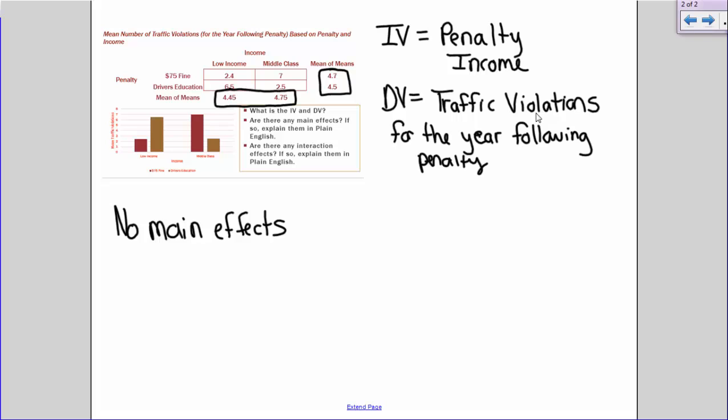But just because you don't have main effects does not mean that you won't have an interaction effect. So let's take a look and see what we find. So for the $75 fine condition, it looks like the low income people have fewer penalties than the middle class people. But for the driver's ed condition, it looks like the low income people have more penalties than the middle class people. So it looks like if income is an issue for you, if you're low income, the $75 fine is a huge deterrent. Probably because you don't have the income to pay that fine to begin with. So you don't want to do that again and you've learned your lesson. But for middle class who are more able to afford that $75 fine, it looks like it doesn't really have much of an impact. In fact, they have the highest number of penalties afterwards. So the money did not deter them at all. But time is valuable and that driver's education is most effective for middle class offenders.